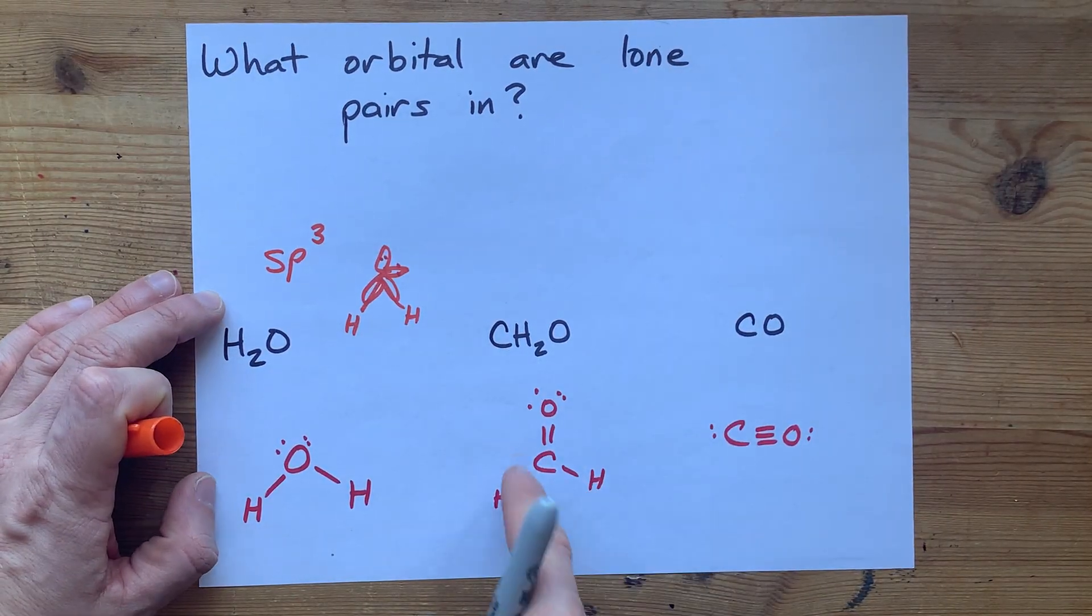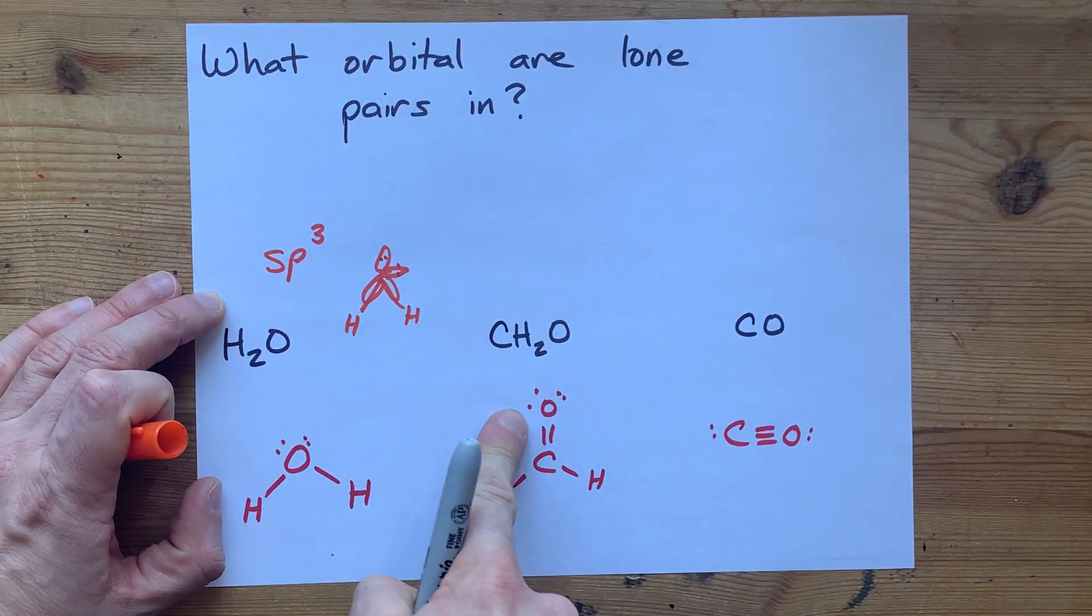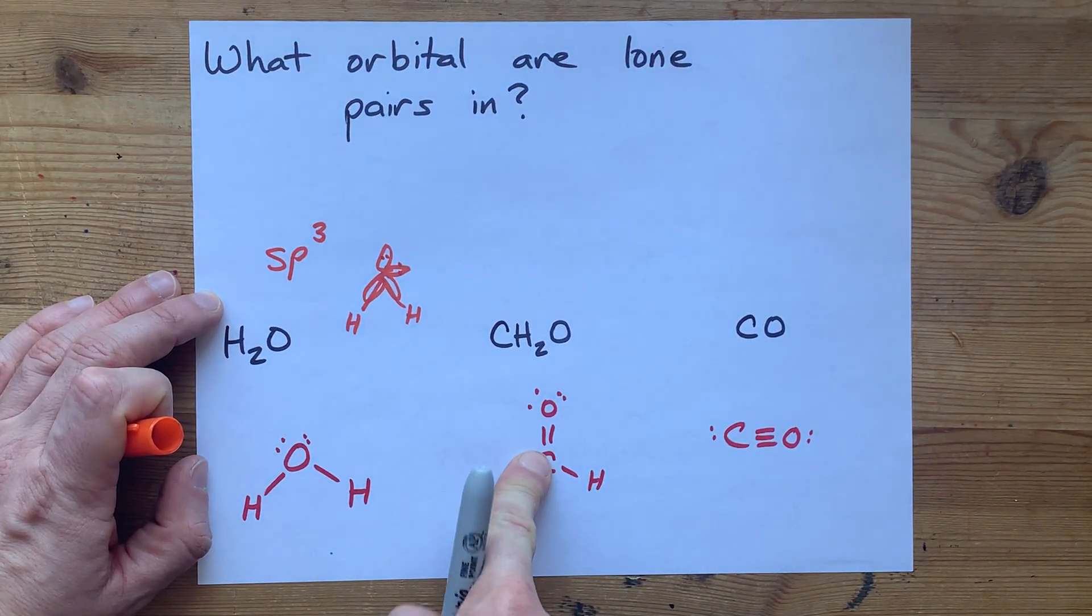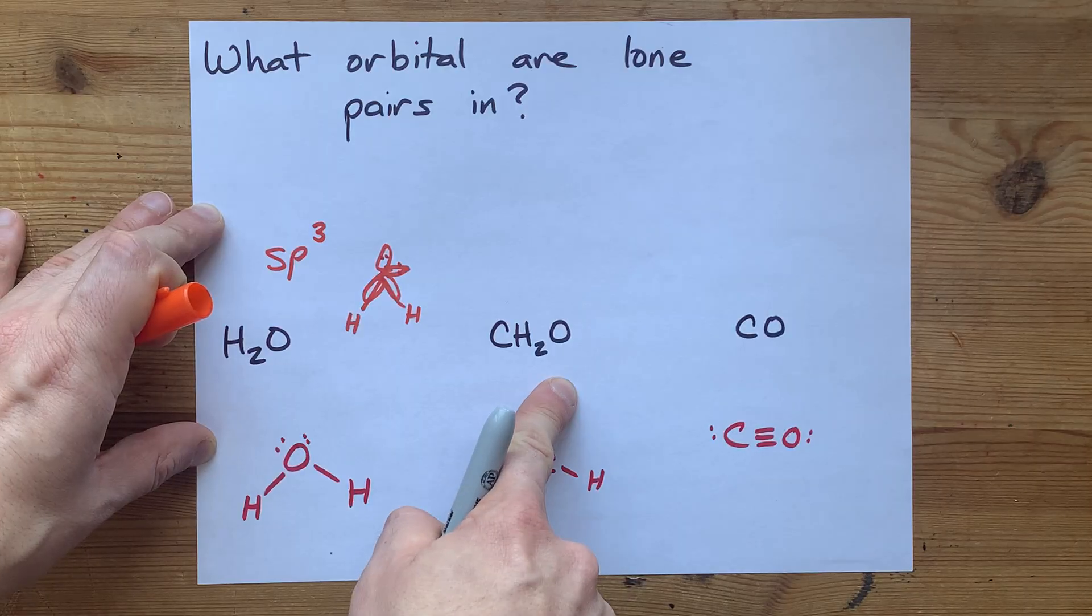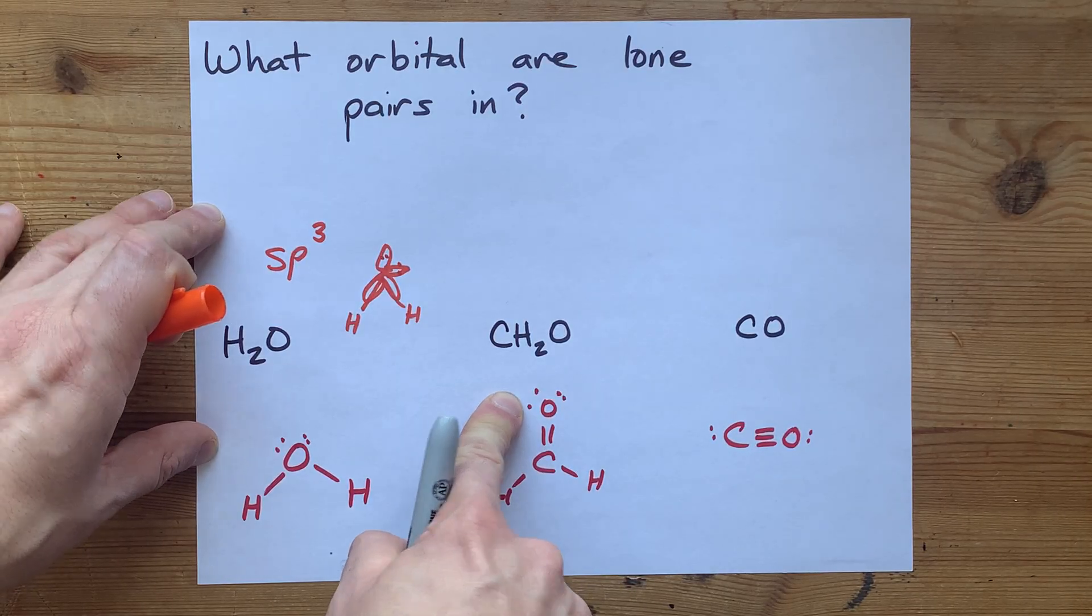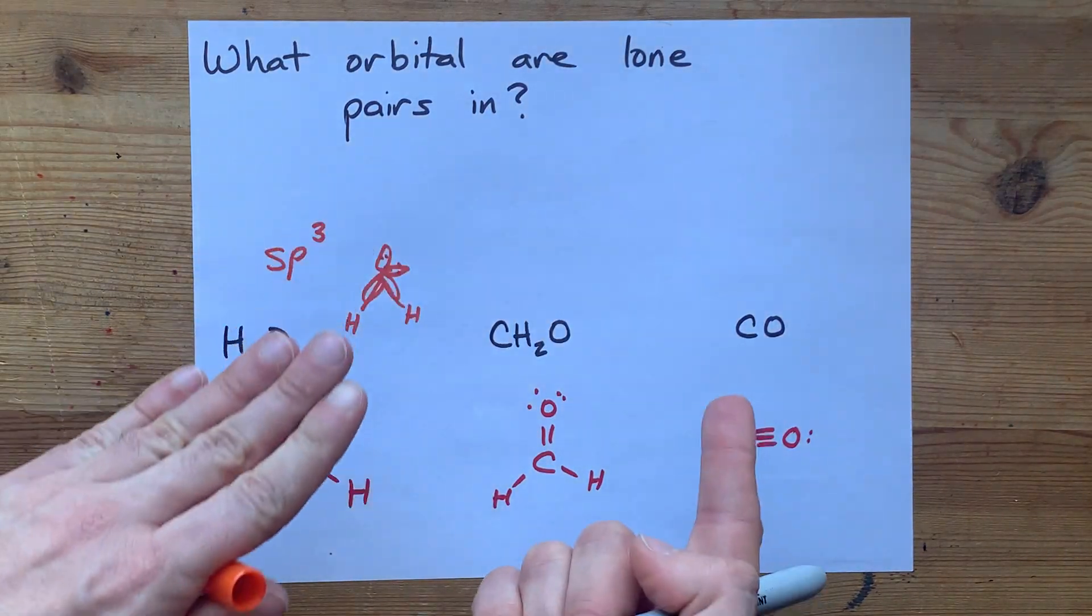Let's do it for formaldehyde. The only lone pairs here are on the oxygen. This oxygen only has three things around it: a carbon, a lone pair, and a lone pair. Three things. Put another way,